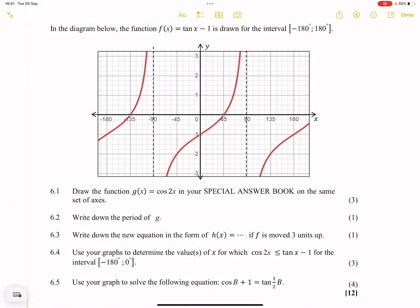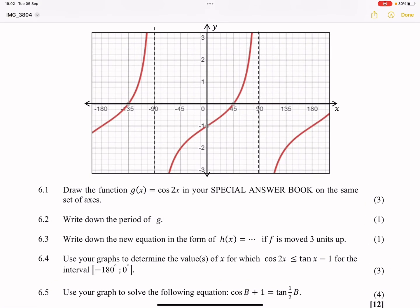Let's quickly have a look at the question. They say in the diagram below, the function f(x) = tan(x) - 1 is drawn for the interval -180° to 180°. Now they say to us, draw the function g(x) which is equal to cos(2x) in the special answer book. So I'm going to draw that onto this diagram that we have over here.